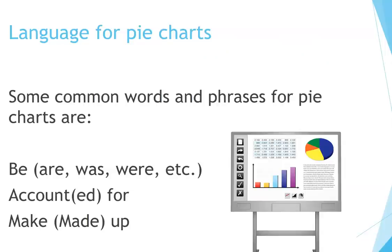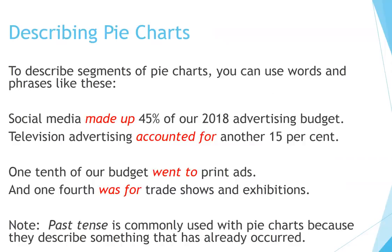Language for pie charts. Some common words and phrases for pie charts are: be, are, was, were, etc. — account or accounted for — make or make up. To describe segments of pie charts, you can use phrases like these: 'Social media made up 45% of our 2018 advertising budget.' 'Television advertising accounted for another 15%.' 'One-tenth of our budget went to print ads.' 'And one-fourth was for trade shows and exhibitions.' Note: past tense is commonly used with pie charts because they describe something that has already occurred.